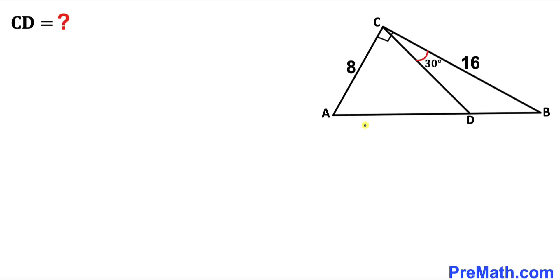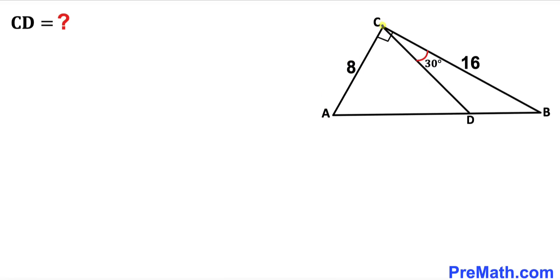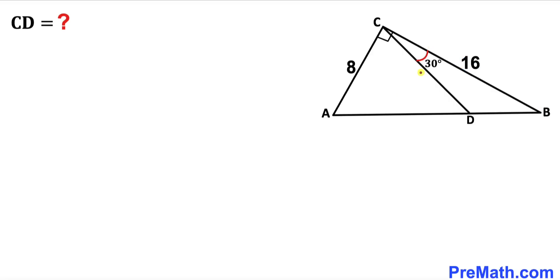Welcome to pre-math. In this video we have a right triangle ABC along with a line segment CD, such that angle BCD equals 30 degrees. Furthermore, side length AC is 8 units and side length BC is 16 units. We are going to find the value of the distance CD.